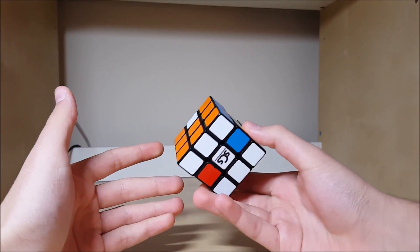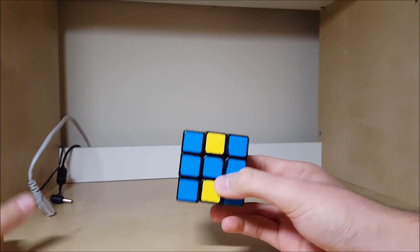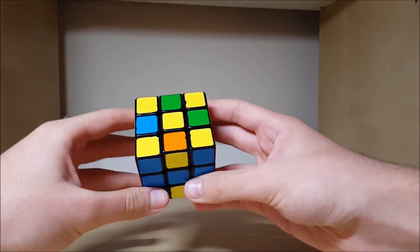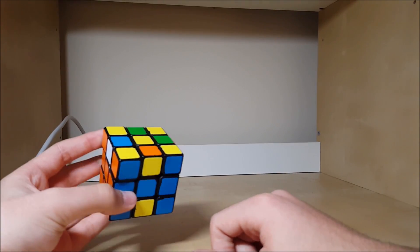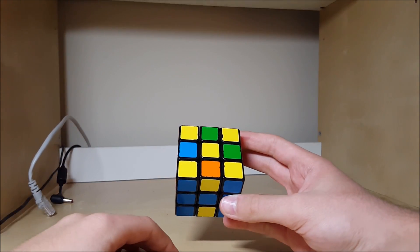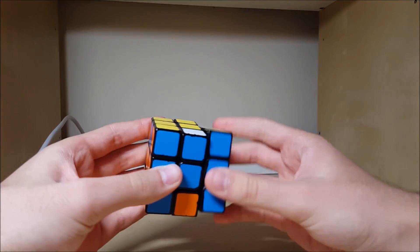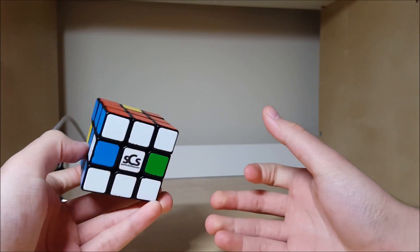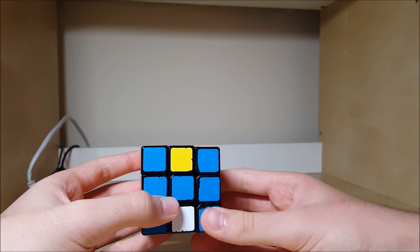But once you have learned full CMLL and are comfortable with it, so maybe like sub 15, sub 12, something like that, you want to start learning multiple algorithms for the same case to avoid this. This is the sixth flip, it's the most annoying edge orientation case. Most people solve it like this, with an algorithm, R'U', R'U', M'U', and like that. But there are other ways to do it, like misoriented centers, that's going to be a video coming up.